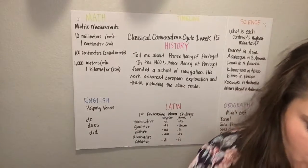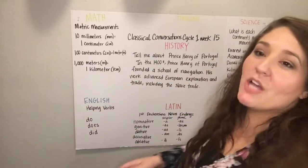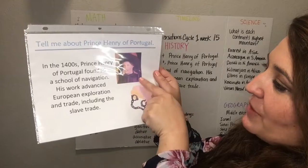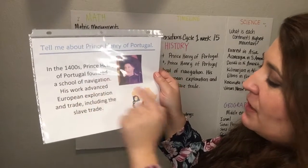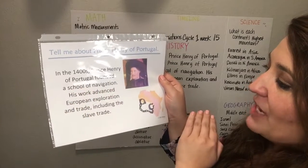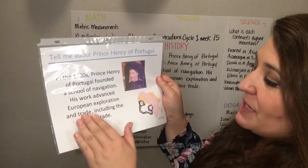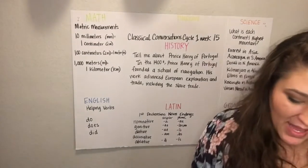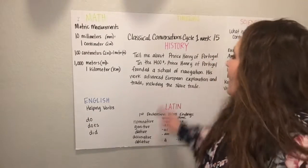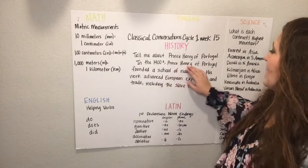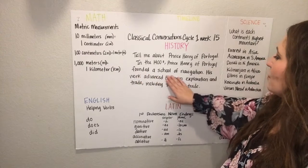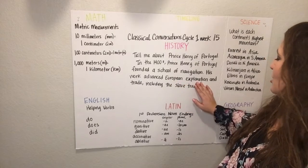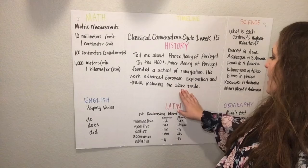Let's go ahead and move on to our history. We were talking about Prince Henry — in the 1400s, this is Prince Henry, a picture of him in Portugal. He founded a school of navigation. His work advanced European exploration and trade, including the slave trade.